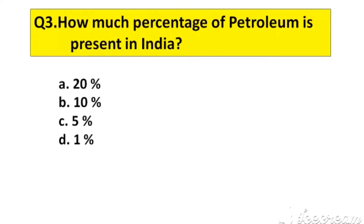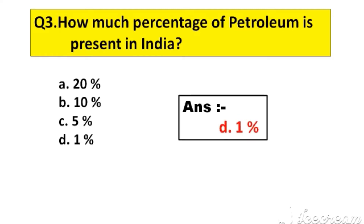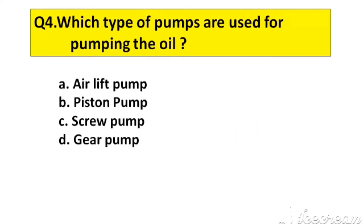Question number 3. How much percentage of petroleum is present in India? Option A: 20%, B: 10%, C: 5%, D: 1%. The right answer is option D: 1%.